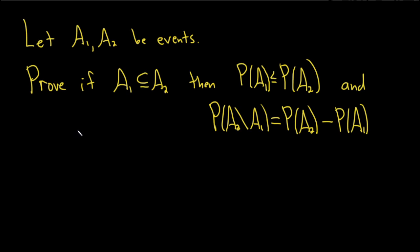In this problem we're going to do a proof. So we have two events, A1 and A2, and we're going to prove that if A1 is a subset of A2, then we have this inequality and this equality.